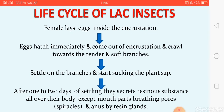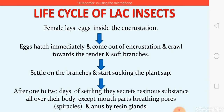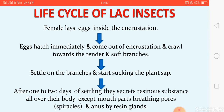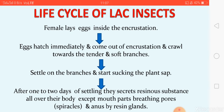After the female lays eggs, the eggs hatch immediately. The first-instar nymph emerges out of the incrustation from the female's anal opening. So the nymph comes out through the anal opening of the female within the incrustation.